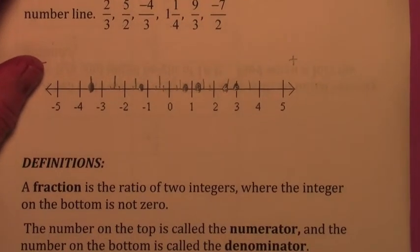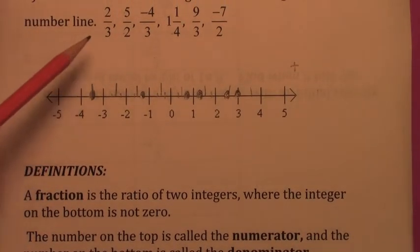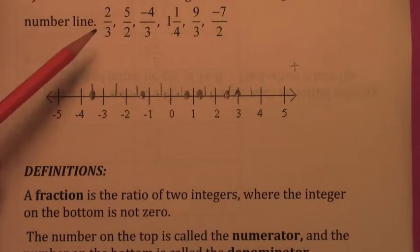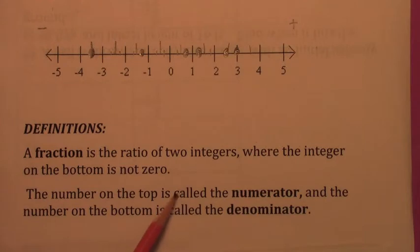Anyway, so what is a fraction? A fraction is the ratio of two integers. One integer divided by another. You got to be careful here, because we don't allow the bottom integer to be zero. So a fraction is the ratio of two integers where the bottom integer is not zero. And like I've been saying, the integer on the top, or the expression on the top, if you're talking about algebraic fractions, the expression on the top is called a numerator, and the number or expression on the bottom is called a denominator.